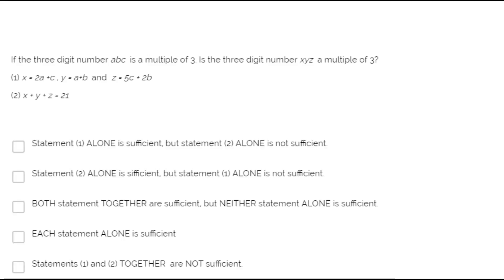If the 3-digit number ABC is a multiple of 3, is the 3-digit number XYZ a multiple of 3? From the question, the 3-digit number ABC is a multiple of 3 — in other words, number ABC is divisible by 3.